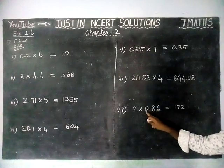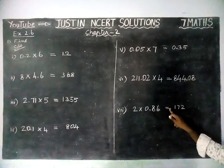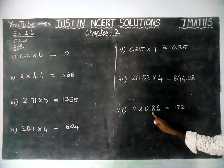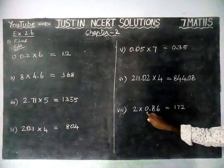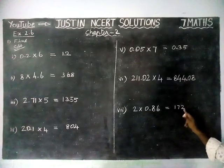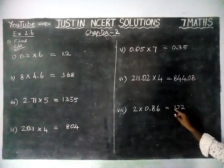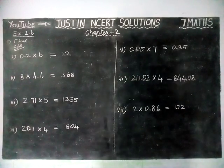And here, when we are multiplying with the 0, we will get the same 0 only. No problem. Now we have two decimal places. 1, 2. Two decimal places. So we have to start from the right hand side. 1, 2. So the answer is 1.72.